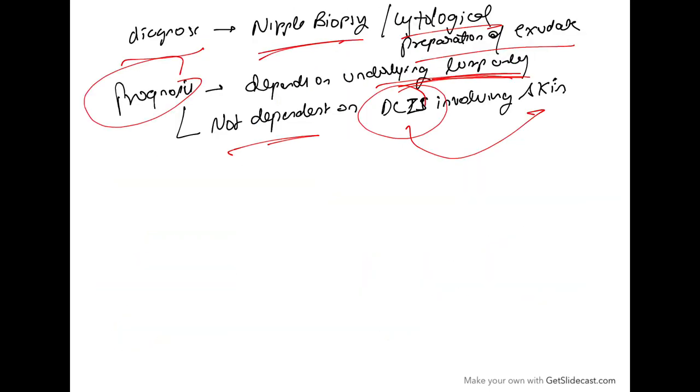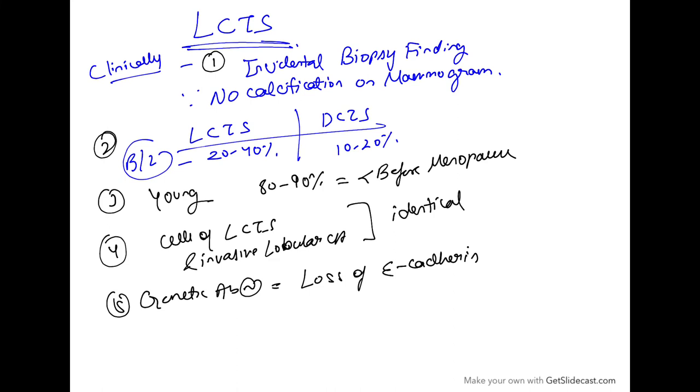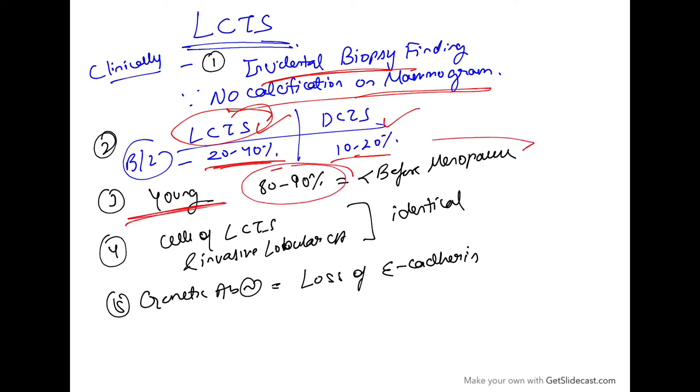Lobular carcinoma in situ is clinically an incidental biopsy finding since there is no calcification seen on mammogram. It is more usually bilateral compared to ductal carcinoma in situ, with twenty to forty percent bilateral versus ten to twenty percent in DCIS. These are seen in young people, with eighty to ninety percent of LCIS happening before menopause.